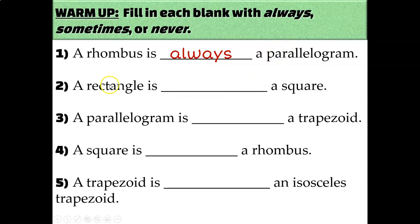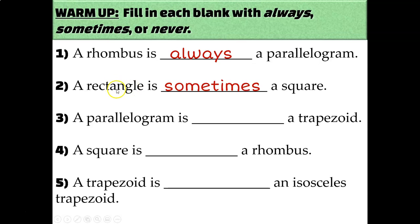But a rectangle is only sometimes a square — it doesn't have to be. A rectangle and a square are similar because they both have four congruent angles, but a square is a more specific version of a rectangle because squares also have four congruent sides. Rectangles only need two pairs of opposite sides that are congruent, so a rectangle could be a square, but it doesn't have to be.